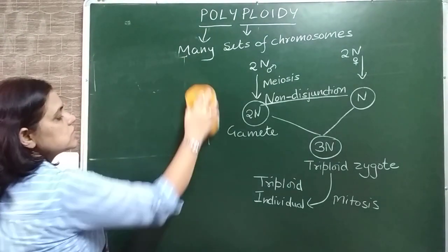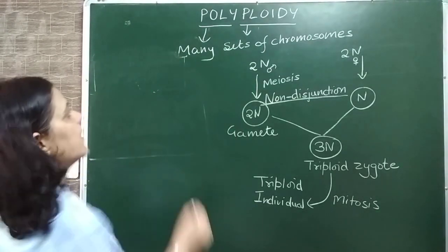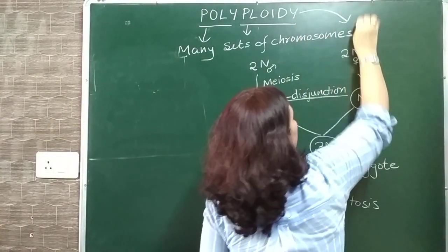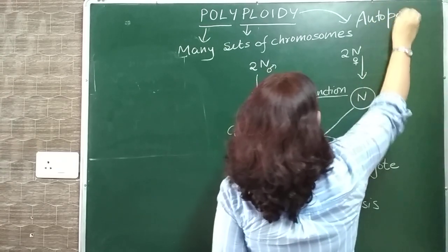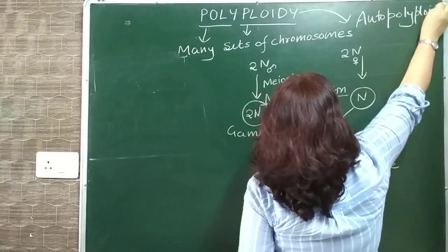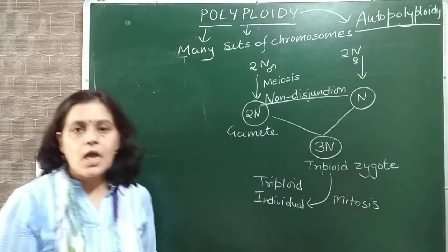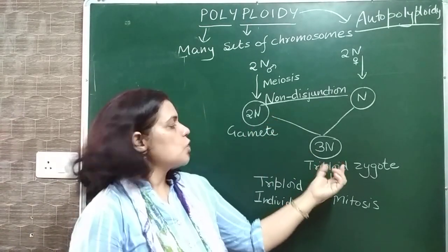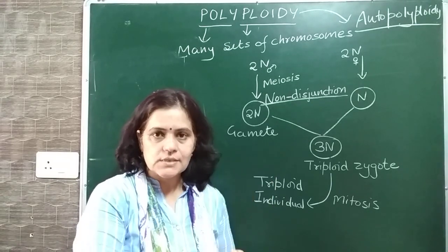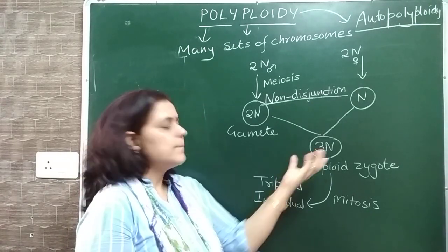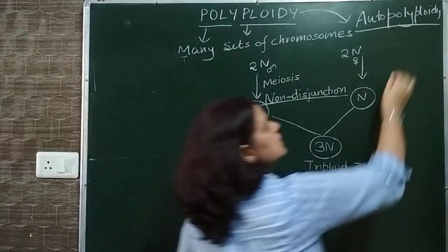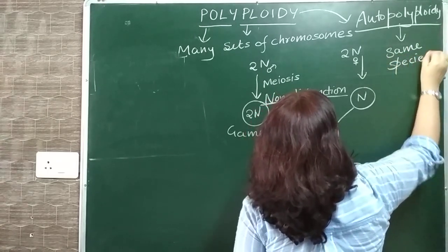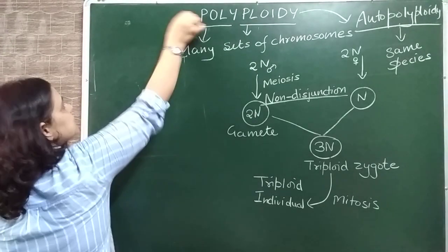So polyploidy has two types. One type is autopolyploidy. In autopolyploidy - auto means self - all sets of chromosomes belong to the same species. So in autopolyploidy, the chromosome sets are from one and the same species.